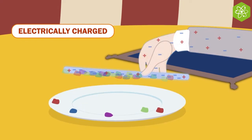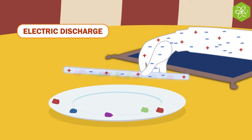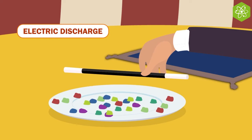All objects become discharged over time because the tiny charges keep moving between objects. This way, objects go back to being neutral.